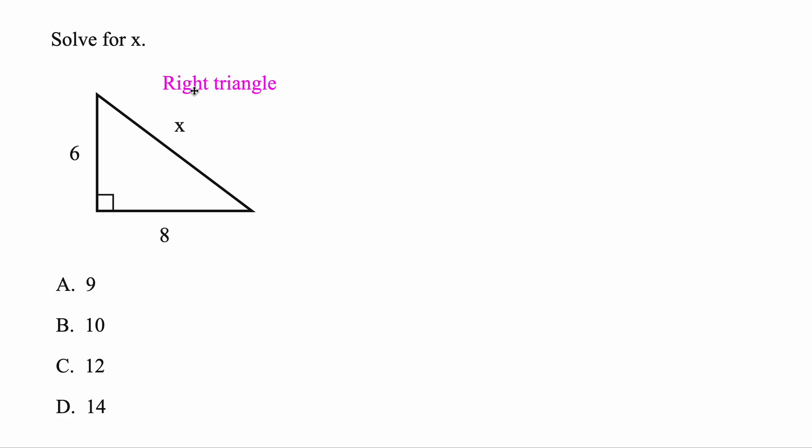Whenever you're given a right triangle, right just means that it has this little box here. That means 90 degrees. And if you know two of the sides, 6 and 8, but you want to find the third side, you could always use Pythagorean theorem. We just want to label what are the sides A, B, and C for our triangle.